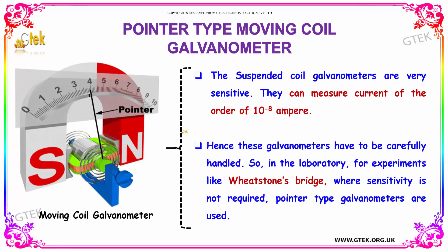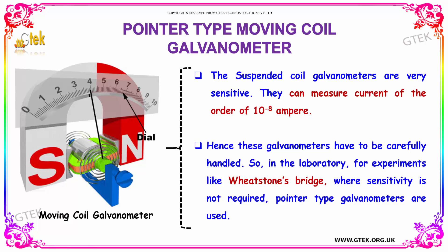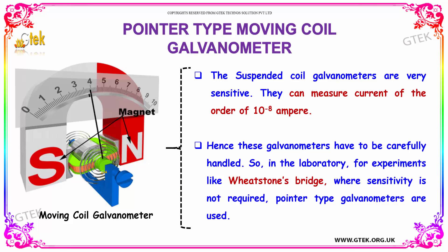The suspended coil galvanometers are really sensitive. They can measure current of the order of 10 to the power minus 8 amperes. Hence, these galvanometers have to be carefully handled. In the laboratory, for experiments like a Wheatstone bridge where sensitivity is not required, a pointer type galvanometer is used.